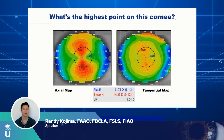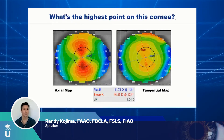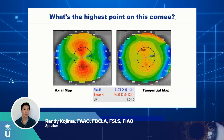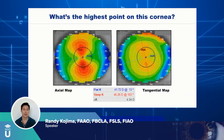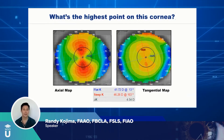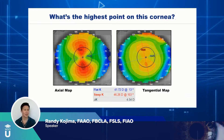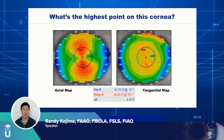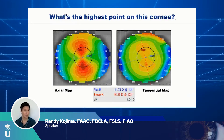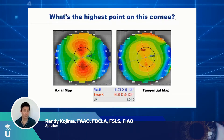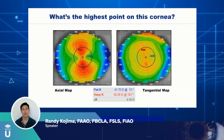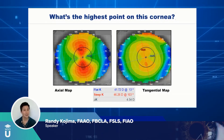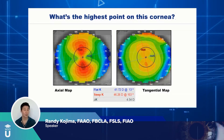The question is: what is the highest point on this cornea? When you look at two interpretations of the same eye — one axial, one tangential — what is the highest point? You would probably say the red on the axial map — that's the steepest portion. And you would be right, that is the steepest portion. But is it the highest point? Similarly on the tangential, the hottest contour is toward the top — steepest, but is it the highest?